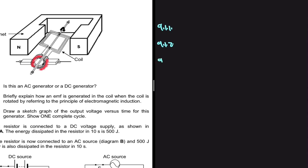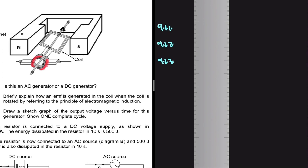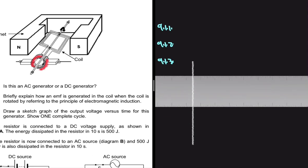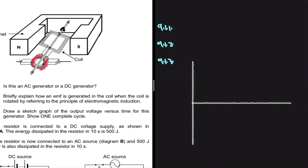Let's get 9.1.3: draw a sketch graph of the output versus time for this generator, showing one complete cycle. As I've already said, we have a DC generator, so the current should be in one direction — it shouldn't cross the X axis. If it is above the X axis, it shall stay there, and if it is below the X axis, it shall stay there.